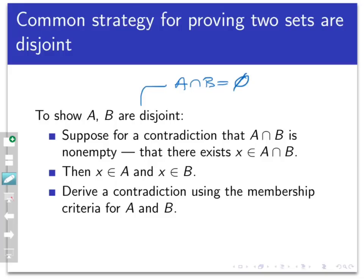And as with many statements given in the negative, we often use contradiction. So one common way to prove that two sets are disjoint is to suppose that A and B are not disjoint — suppose for a contradiction that A intersect B is non-empty, that there actually is something in the intersection.